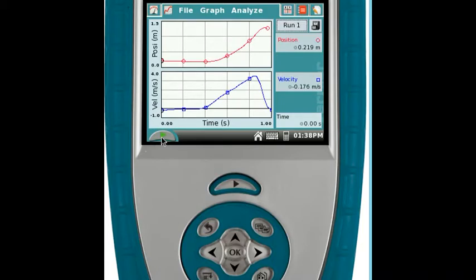And there we go. So once we've pressed collect and the object's fallen, we've got two graphs shown. Position against time and velocity against time. Looking at the position time graph, you can see it's an upward curve showing that the speed is increasing. The slope of this graph is the speed of the object.